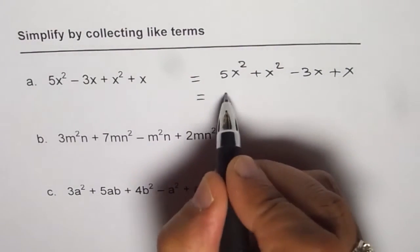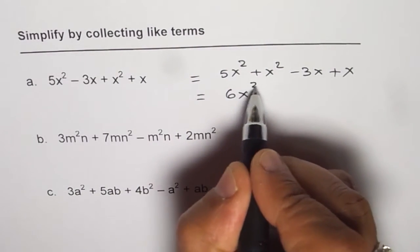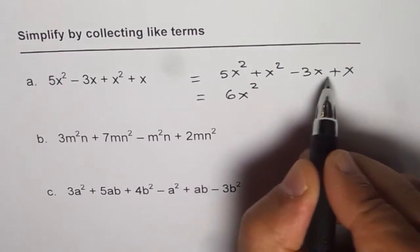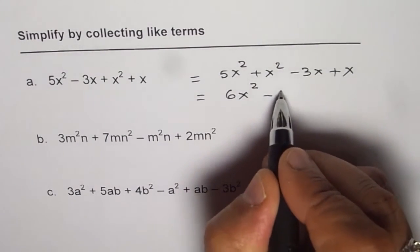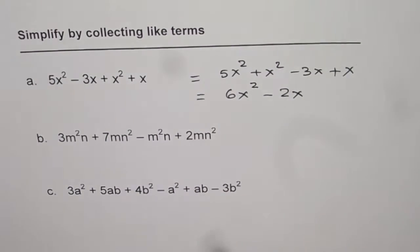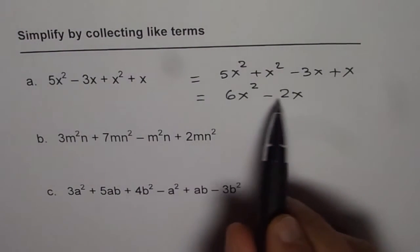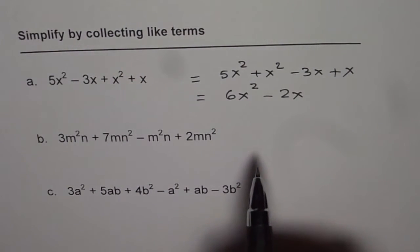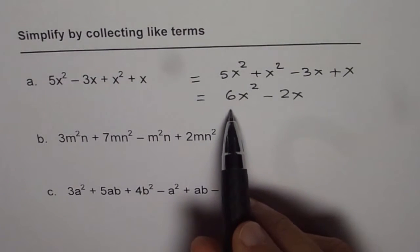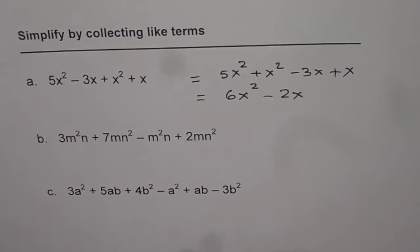5x² + x² is 6x², and here we get -3x + x is -2x. So that is how we can simplify them. We will keep them as sum or difference at the moment. Later we will see how to factor by taking common factors.